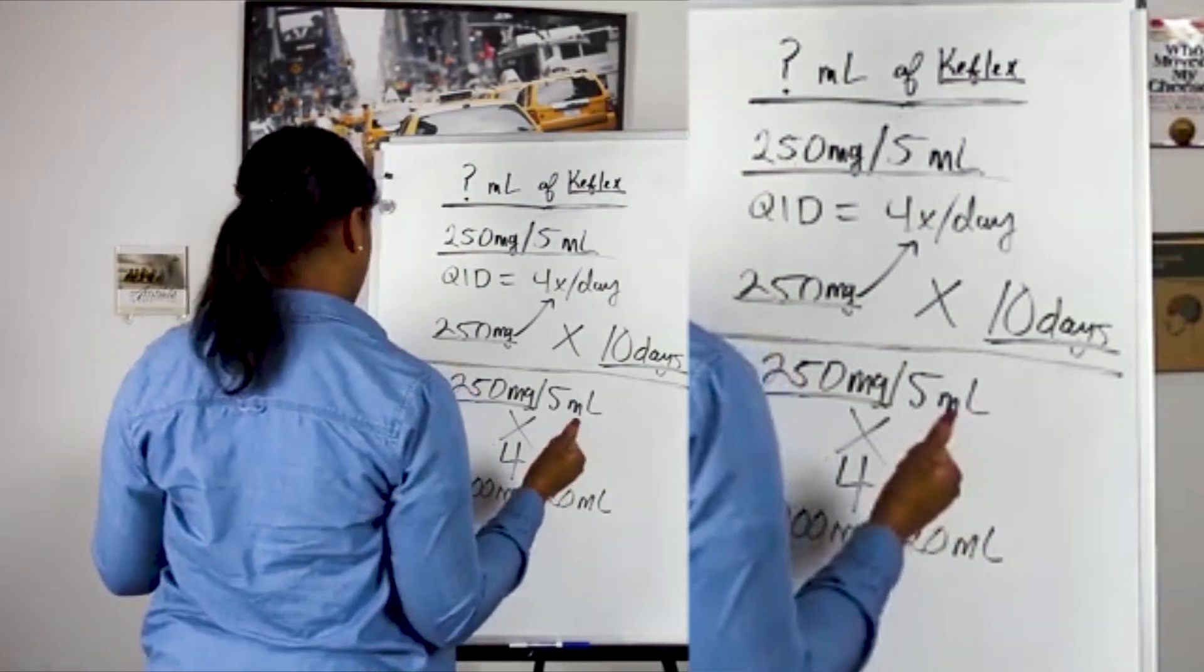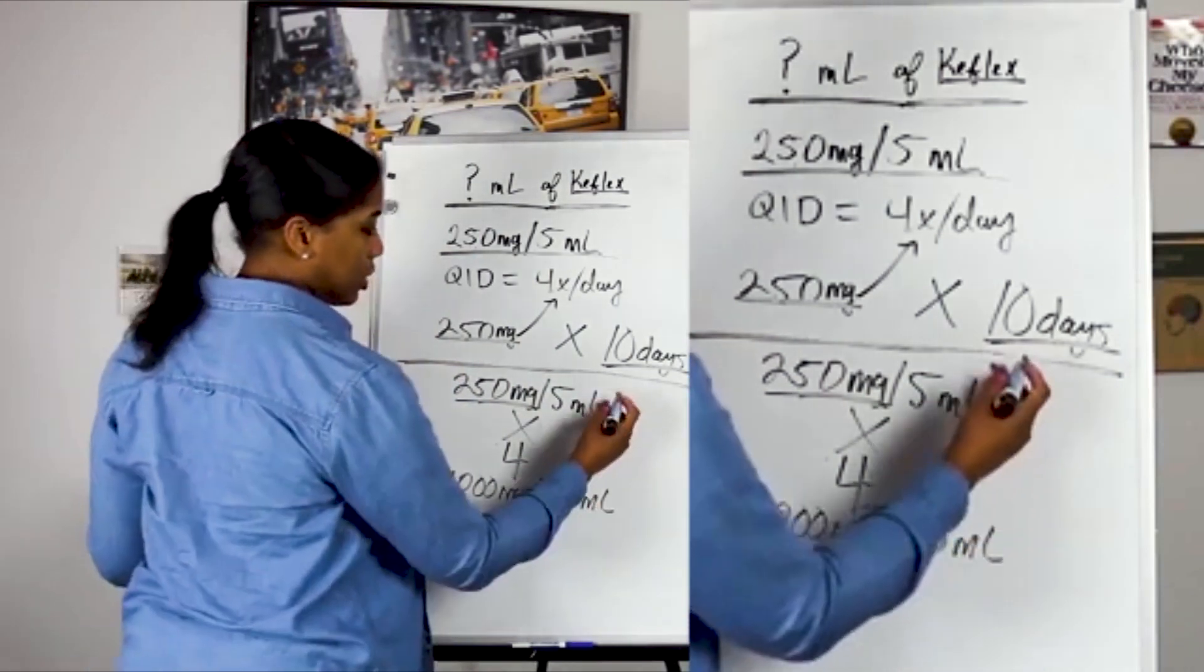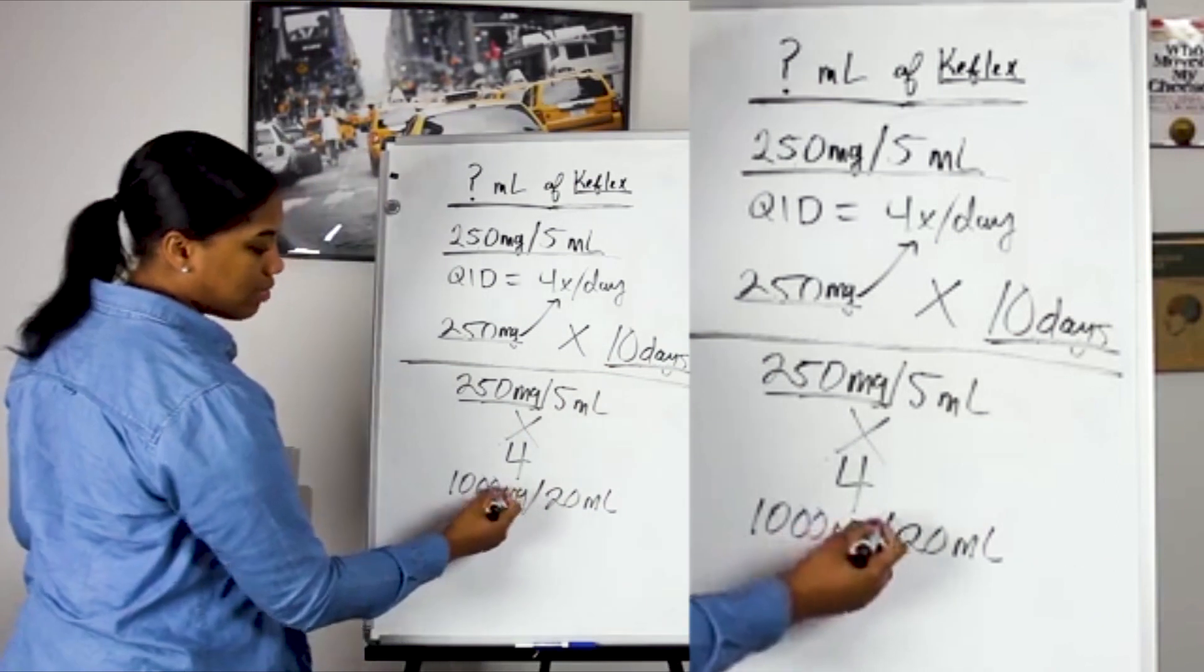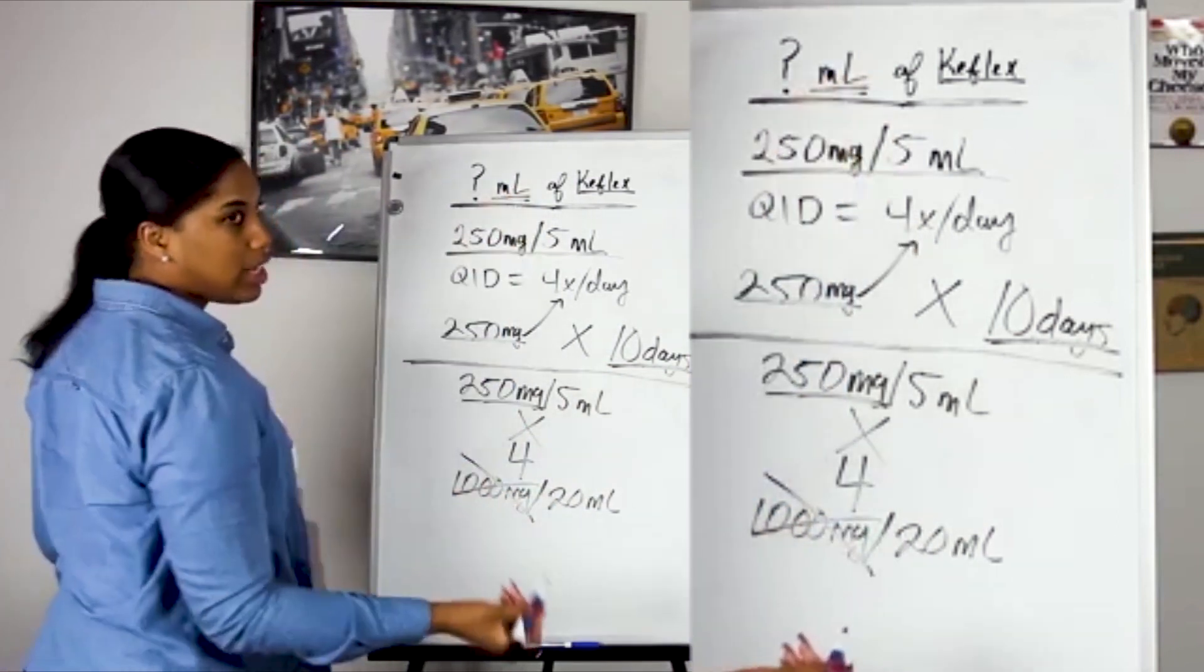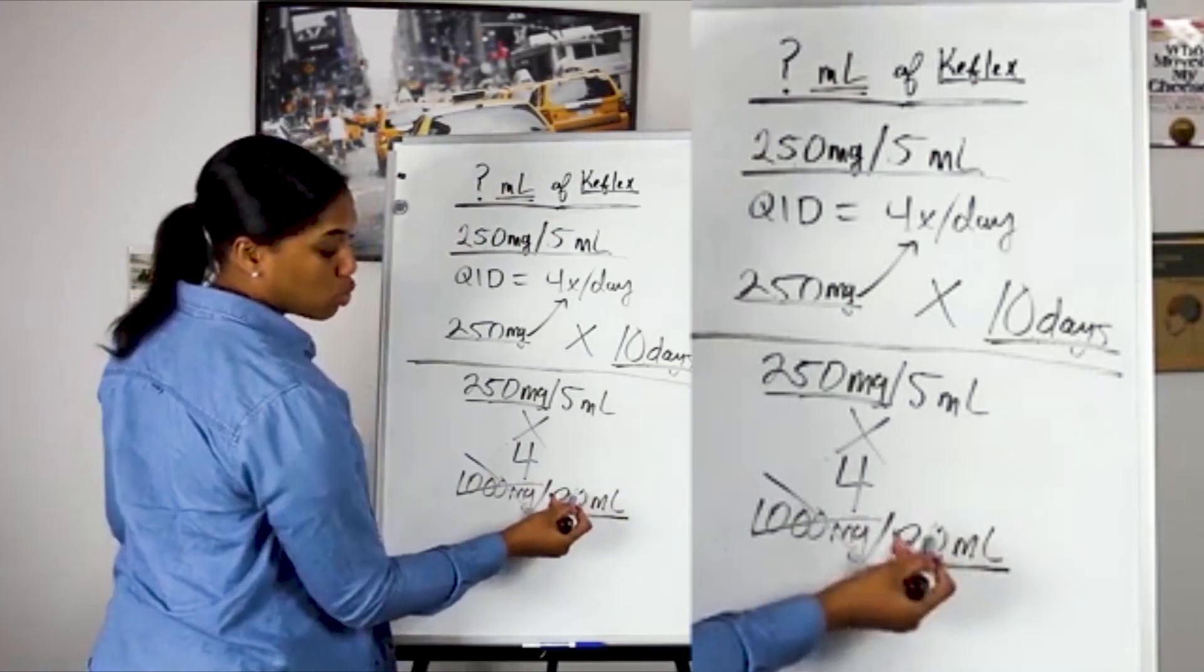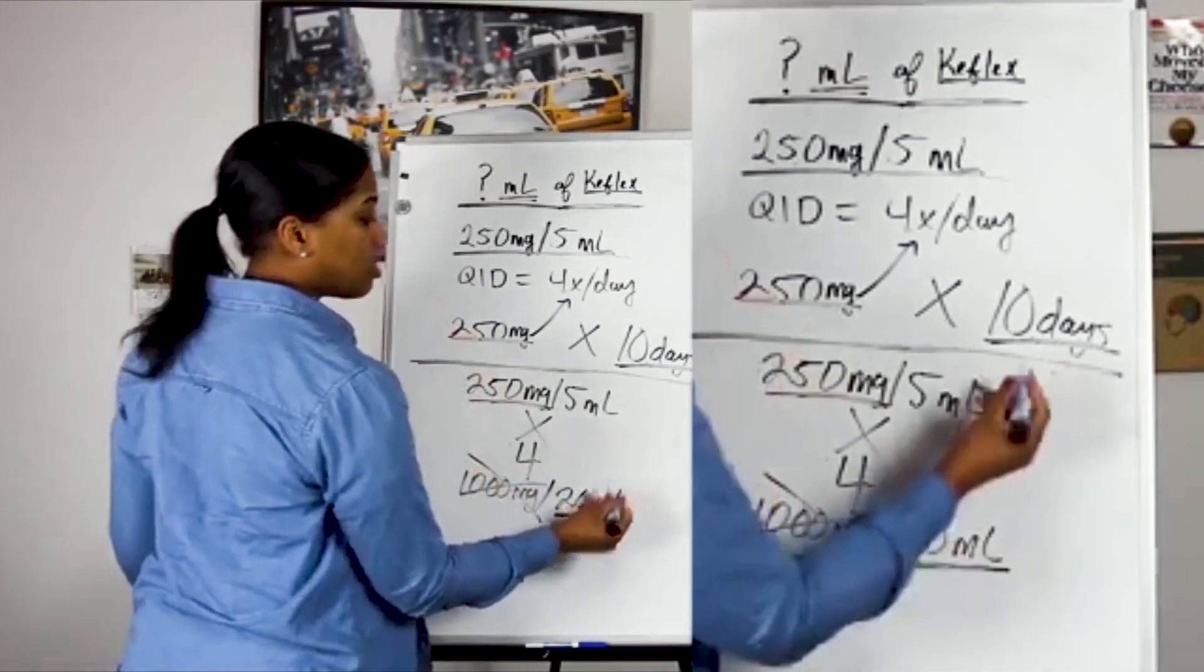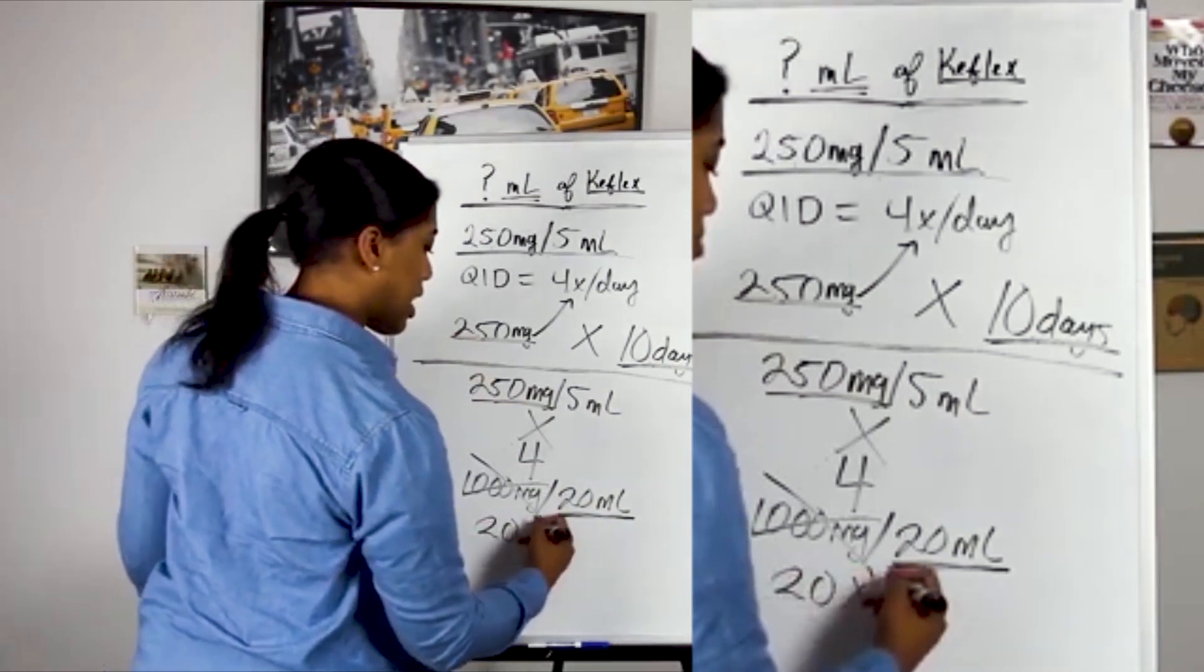Now they also said that it is for 10 days, so we're not quite finished yet. We don't even need the milligrams anymore because they asked how many milliliters. We would basically take this 20 and multiply it, because this 20 milliliters represents how much the patient needs for one day. Now we need to know how many for 10 days, so basically you would say 20 times 10.